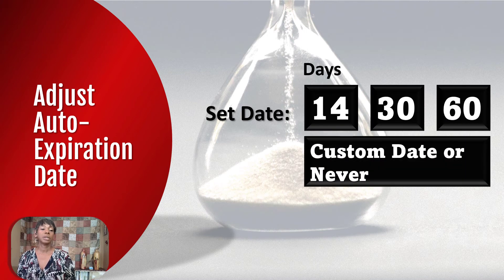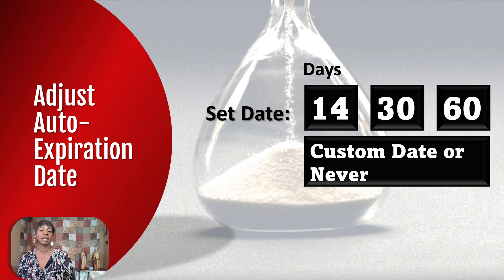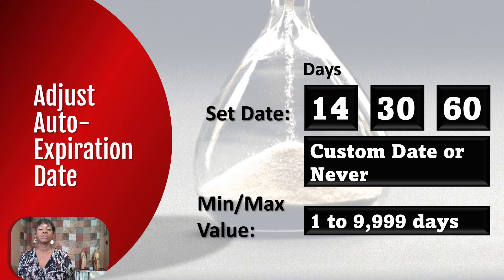You have the flexibility to modify the auto expiration date. For example, if your meetings are held every quarter and you prefer to keep recordings for 120 days instead of 60, you can change it to 14, 30, or 60 days, add a custom date, or even select never to expire. The safe minimal and maximal date values are 1 day up to 9,999 days — which is about 27 years — so you have a lot of time.